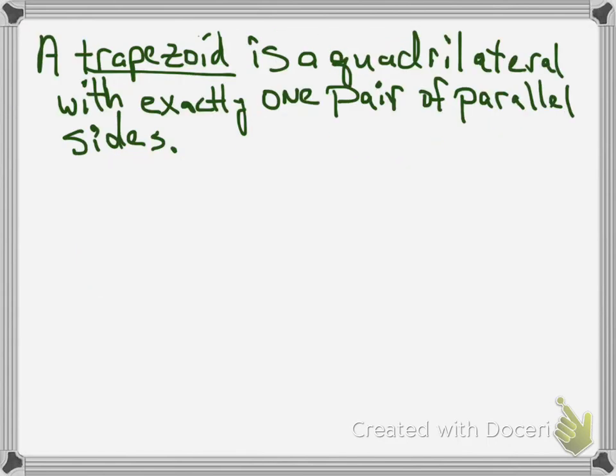So let's start off with all the definitions, theorems, and everything else that we want to talk about. We're going to talk about a trapezoid. A trapezoid is a quadrilateral with exactly one pair of parallel sides.